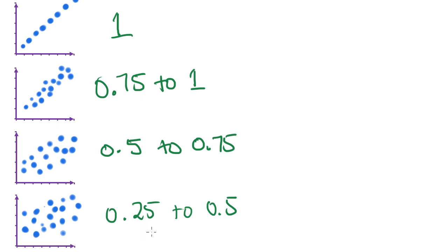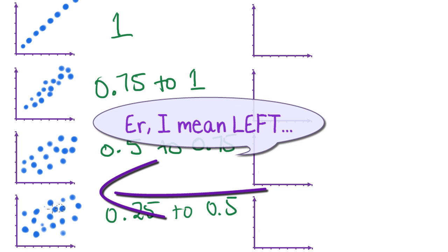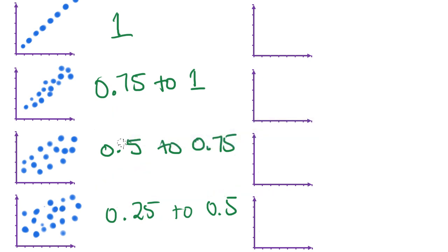And anything less than 0.25, there's not much of a relationship at all. You'd say almost no correlation. They hardly relate. Now if you notice, all those relationships that I've drawn on the right there go in a positive direction. They go up the hill like that.